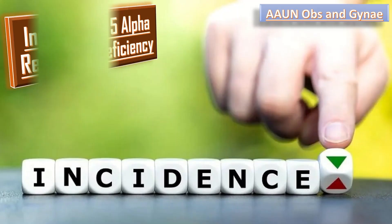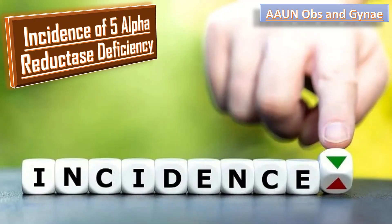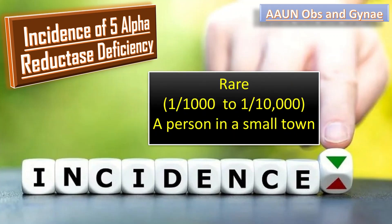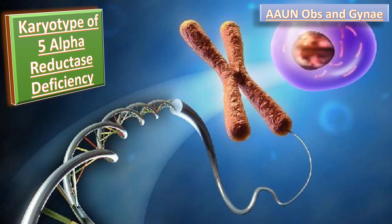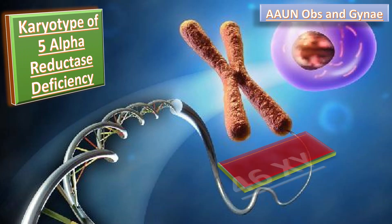The incidence of 5-alpha reductase deficiency: this disorder is a rare condition, present in 1 in 1,000 to 1 in 10,000, meaning a person in a small town is affected by this condition. The karyotype is 46XY.